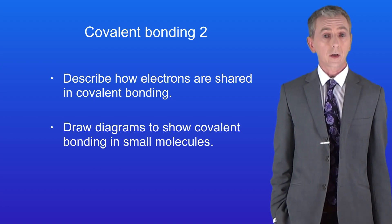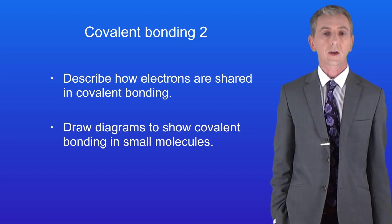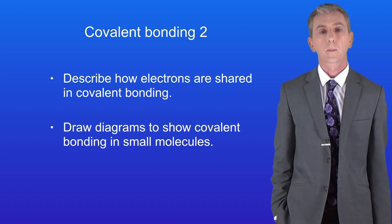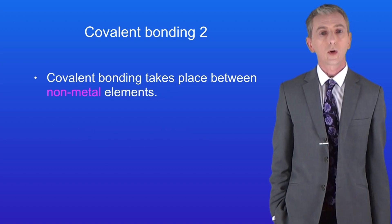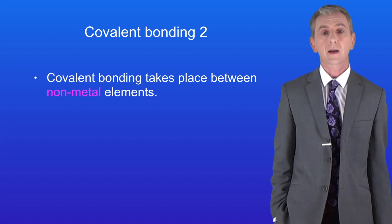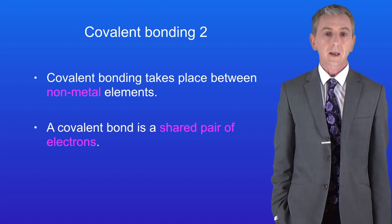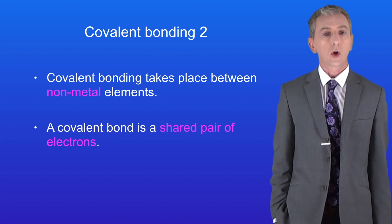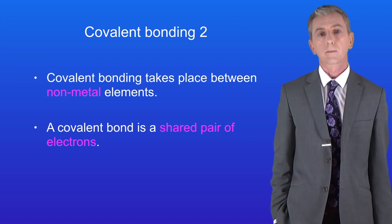In the last video we started looking at covalent bonding, so here are two key facts that you need to learn. Firstly, covalent bonding takes place between non-metal elements. Secondly, a covalent bond is a shared pair of electrons.